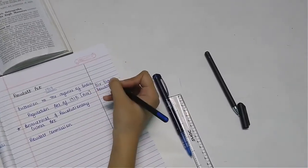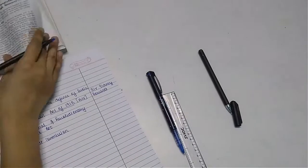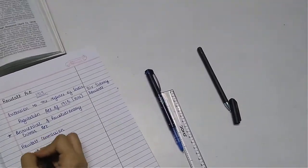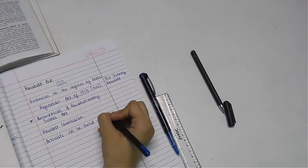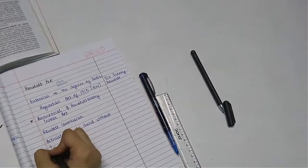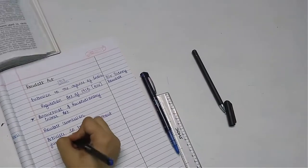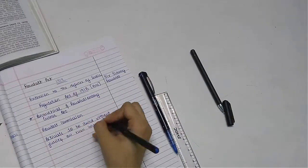Then I wrote down why was Rowlatt Act brought into action by the British. And the reason behind it was it included the rules that the activists could be arrested without trials and so on. This is how I make my notes.